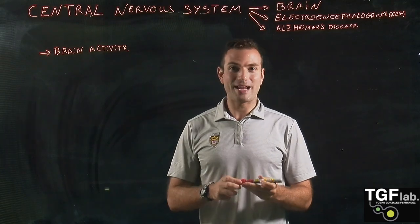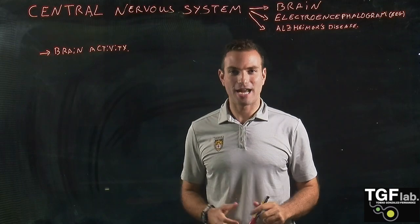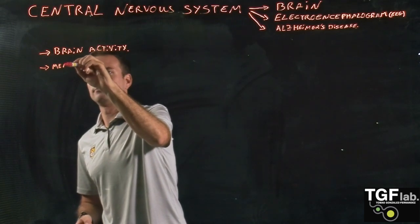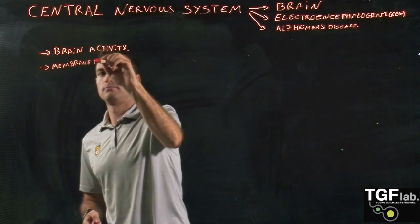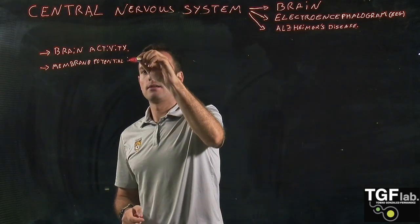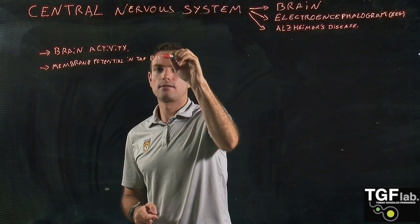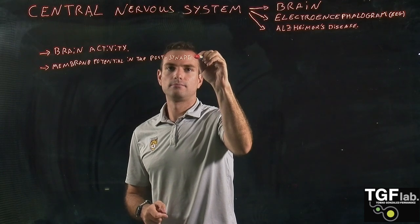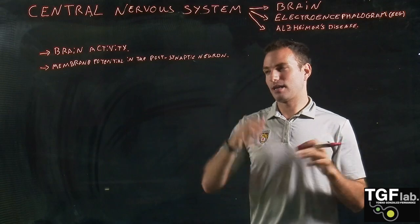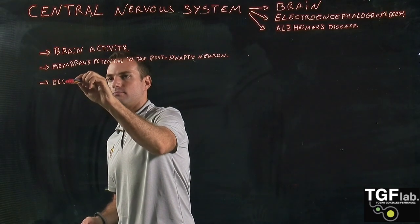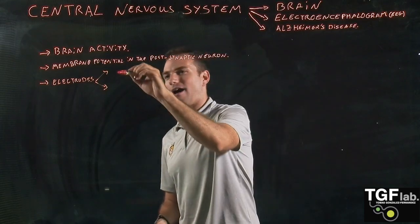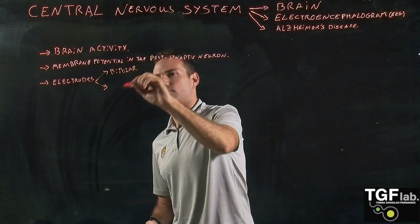It's going to measure the activity of a large group of neurons that are going to fire action potentials. Specifically, what it measures is the membrane potential — the change in the membrane potential in the postsynaptic neuron. This is done through the placement of electrodes in our brain, and we have two types of electrodes: bipolar and unipolar.